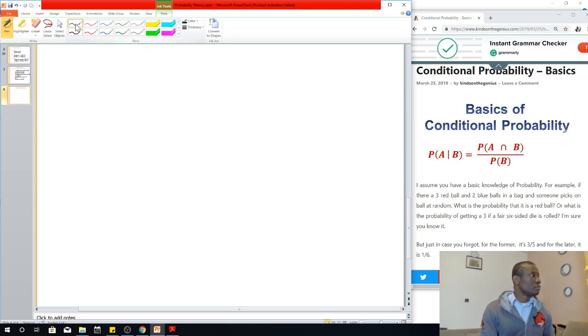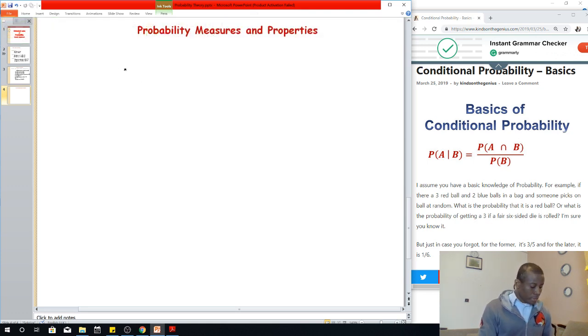The first one: probability of the universal state is one. This means that the probability that an event in the universal state, or in the sample space, is one. Sometimes textbooks may use these terms interchangeably.